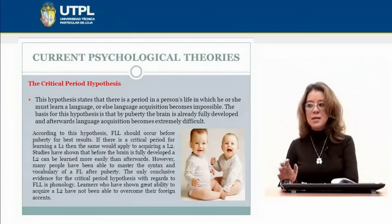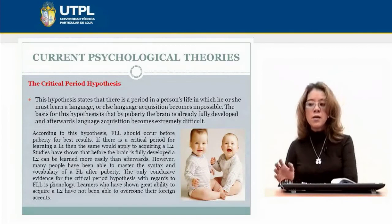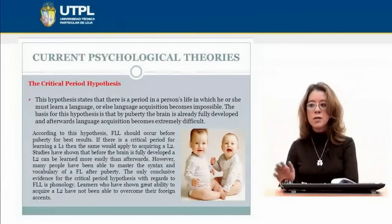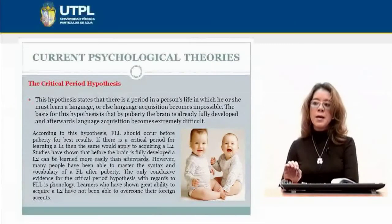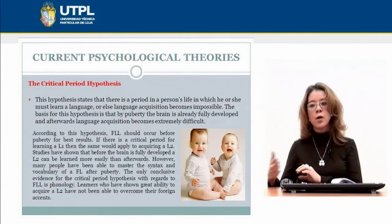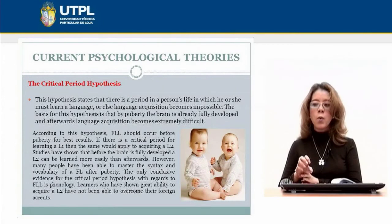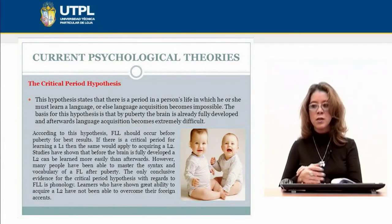The critical period hypothesis means that there is a stage from approximately 2 to 7 or 9 years of age where children can acquire a language without an accent. After this period, some scientists say the brain is fully developed and it becomes more difficult to acquire a second language. Children who learn a second language after this period may acquire a foreign accent. Some scientists suggest it is better to learn a foreign language before puberty.